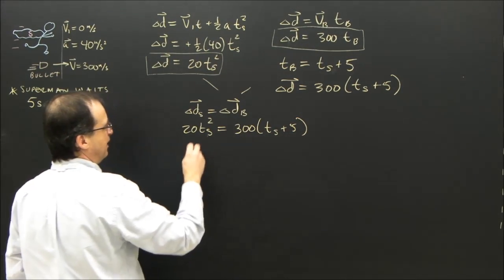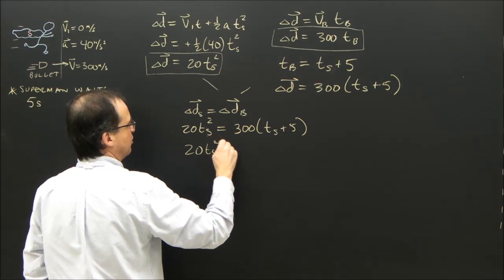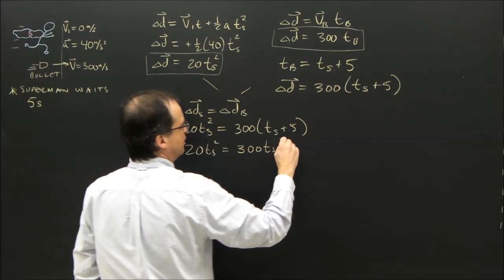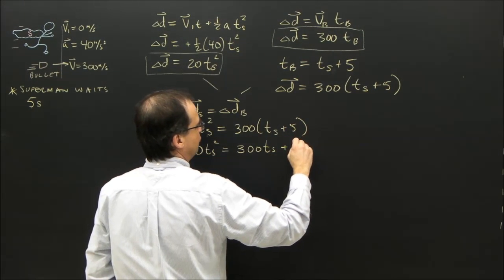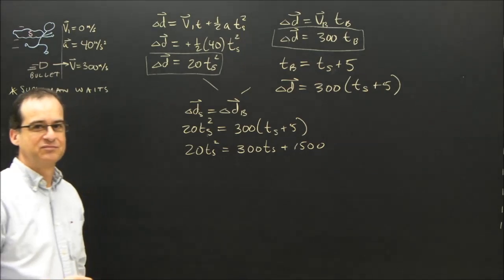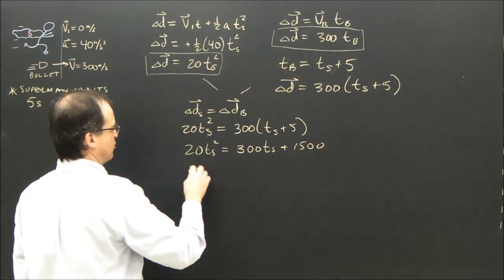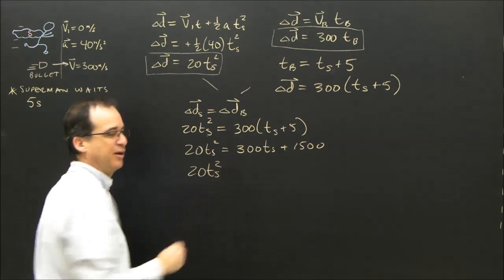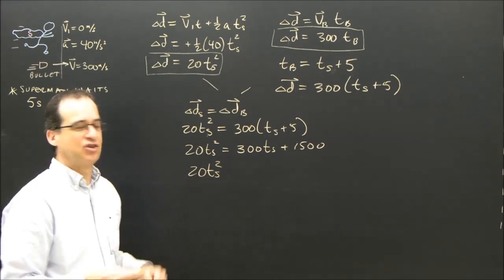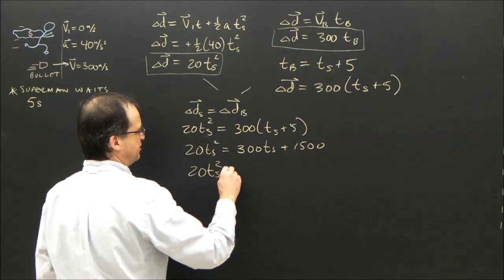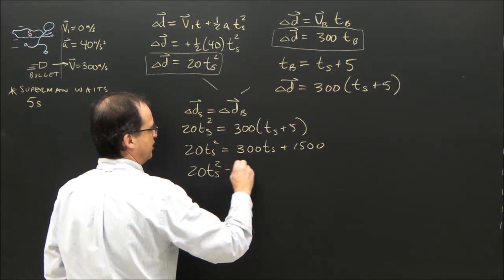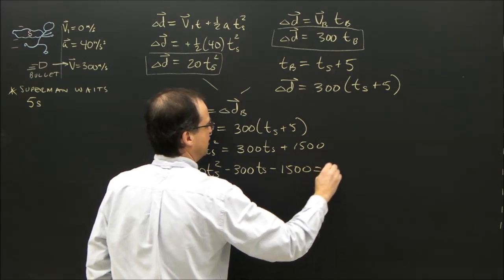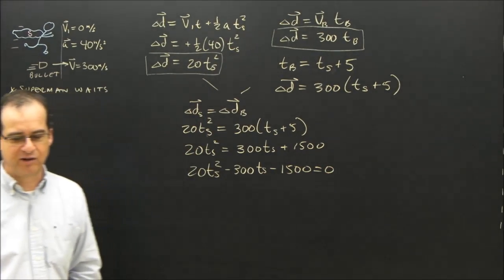I've got to expand that. 20 times Superman squared equals 300 times Superman plus 1,500. Well, that's a quadratic, so I put it into a formal quadratic. Now it's just math. Here's an equation I need to solve for T. So 20T Superman squared minus 300 times Superman minus 1,500 equals 0. There's my quadratic equation.